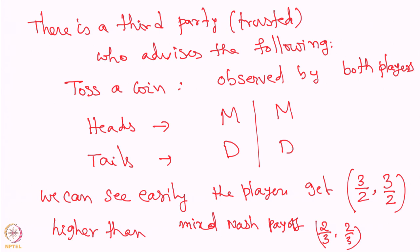If we look carefully, the total payoff they are receiving is 3, which is the same as what they receive in any of the deterministic Nash equilibria. Once both players know they are following this third-party advice, they have no incentive to deviate, because they know the other player will stick to this strategy. This is known as a correlated equilibrium. We will see one more example and then formally define it.